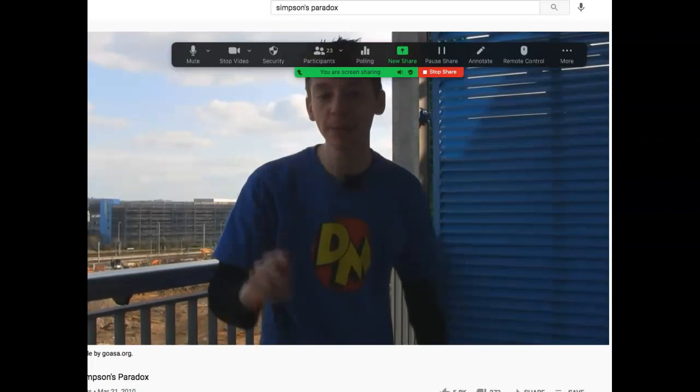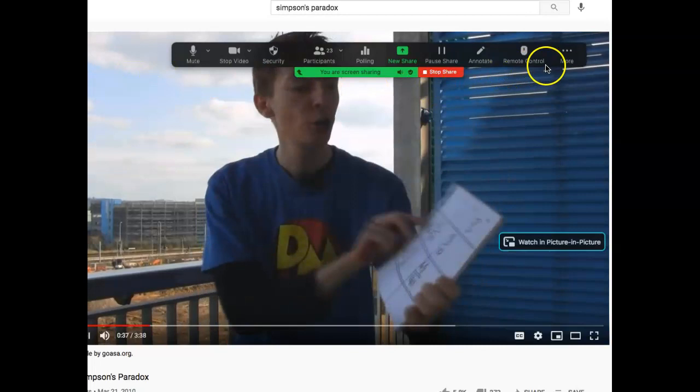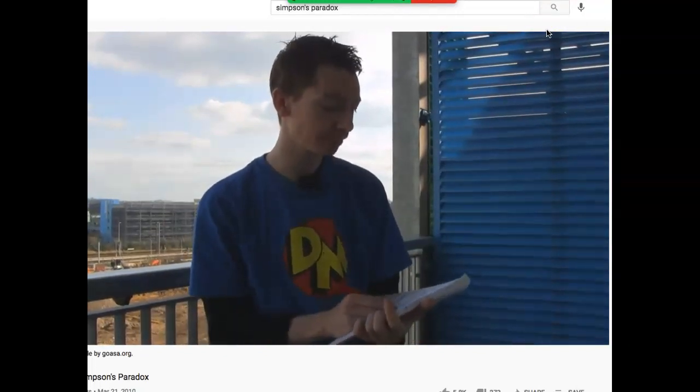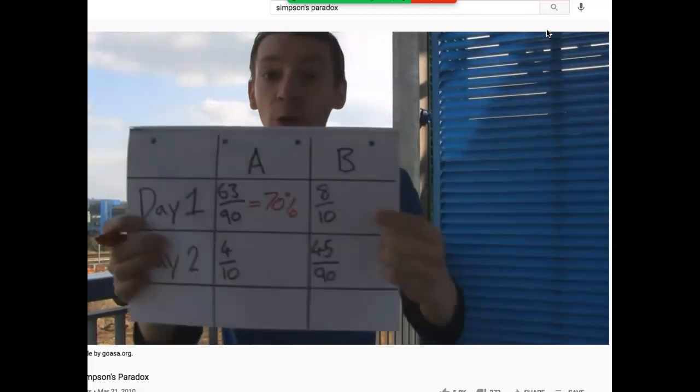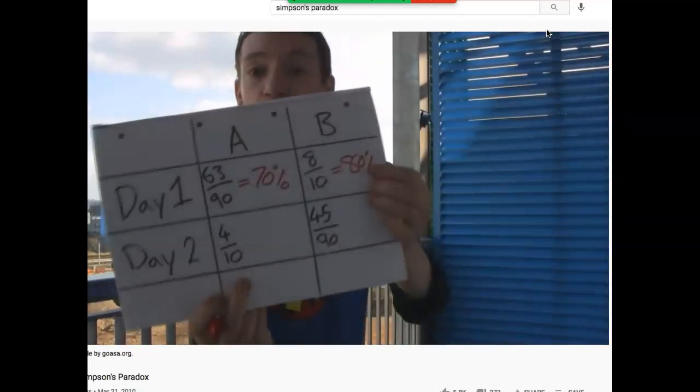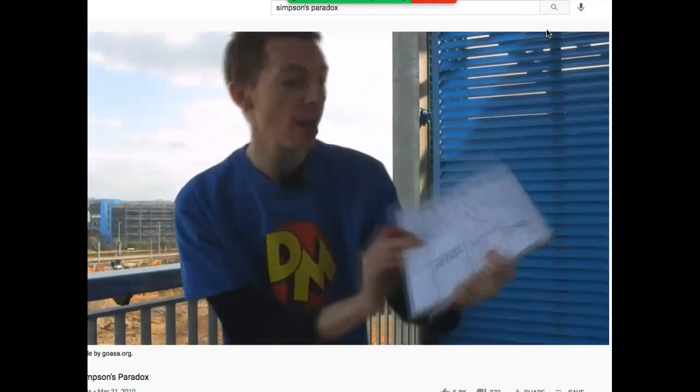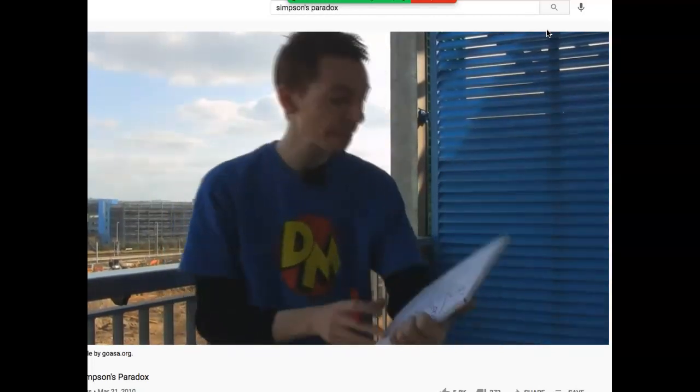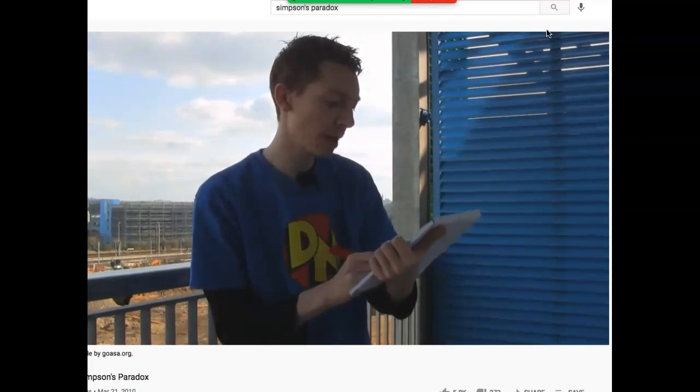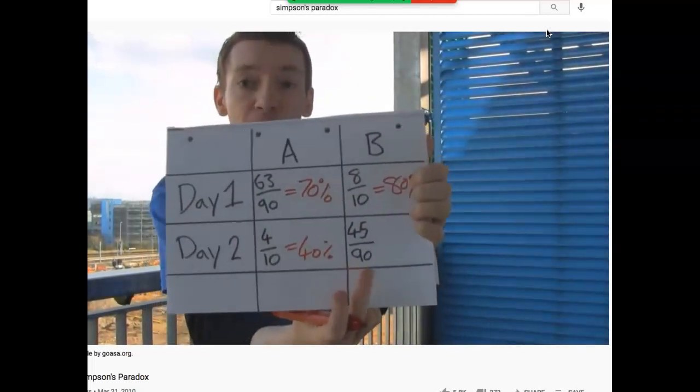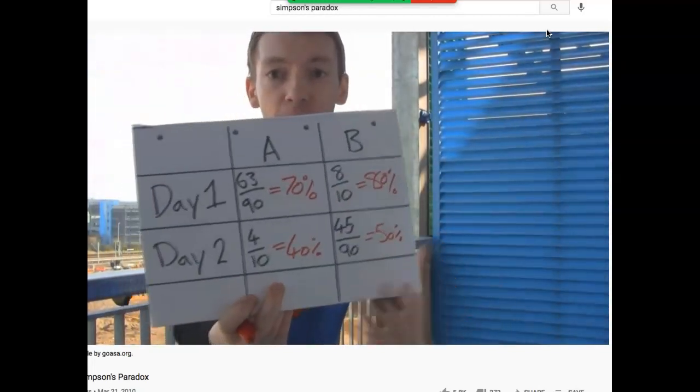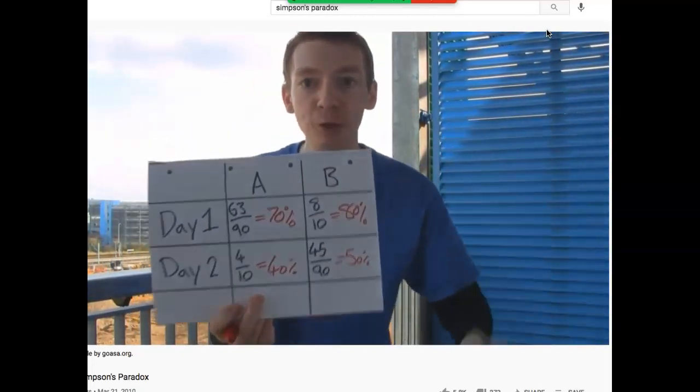You're suffering from a mysterious and embarrassing illness. There are two drugs to cure this illness, drug A and drug B. On day one, drug A cures 63 out of 90 people, or 70 percent. Drug B cures 8 out of 10 people, so it cures 80 percent. On day one, drug B is winning. On day two, drug A cures 4 out of 10 people, or 40 percent. Drug B cures 45 out of 90 people, so it cures 50 percent. Again, drug B wins. It's better on day one and better on day two.